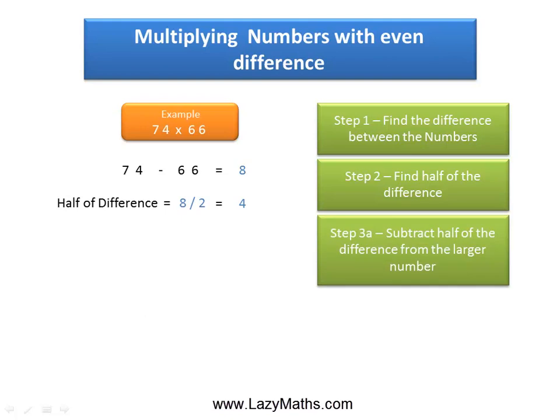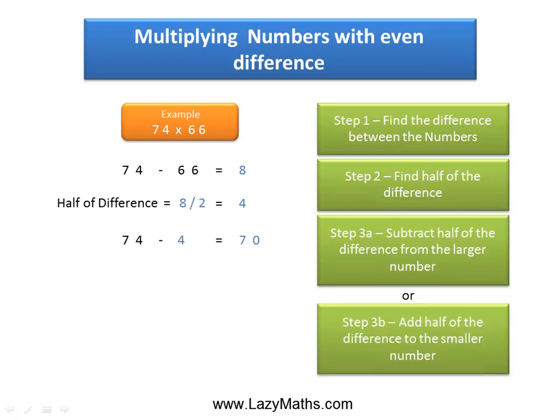The next step involves either subtracting the 4 from the larger number, that is 74 minus 4 which gives us 70, or we can add the 4 to the smaller number—66 plus 4 also gives us 70. Either way, we'll get 70 as our answer.